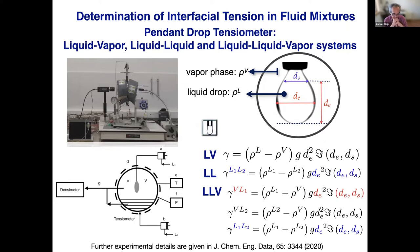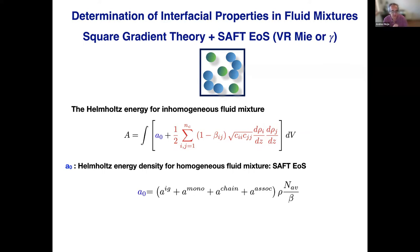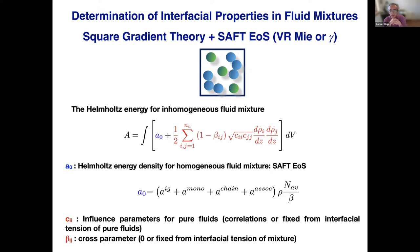For experimental details, the reference at the bottom of the page describes how we obtain surface tension from experimental measurements. One of the options to describe interfacial behavior is the square gradient theory, which is a specific case of DFT theory. Here we use square gradient theory plus a cubic equation of state. The expression has two different terms: the first is the Helmholtz energy density for homogeneous fluids using the cubic equation of state, and the second involves the influence parameter for pure fluids and a cross parameter fixed by binary mixture surface tension data.